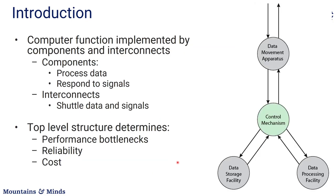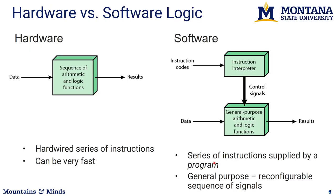A CPU has a few core functions: a control mechanism which makes this a general purpose computer, a data movement apparatus which moves data into I/O, a data processing facility where all arithmetic instructions are performed, and a data storage facility which is our memory.